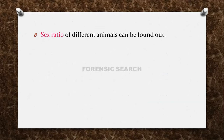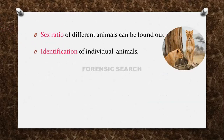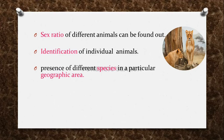The sex ratio of different animals can also be found out. That means in a given particular area or forest, how many are male and how many are female — the sex ratio of different animals can be found out. Then, identification of individual animals — we can see which specific animals are present there. And the presence of different species in a particular geographic area — in a particular forest, which species and how many species are present — we can find out on the basis of Pugmarks.